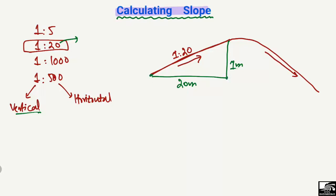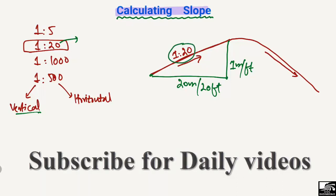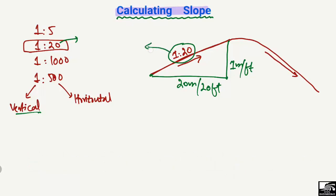This could also be in feet — 1 foot vertical and 20 feet horizontal. The unit may vary, but what must be kept in mind is that if 1 part is vertical, then 20 times that is the horizontal length of the road. This is how the slope of a road is expressed.